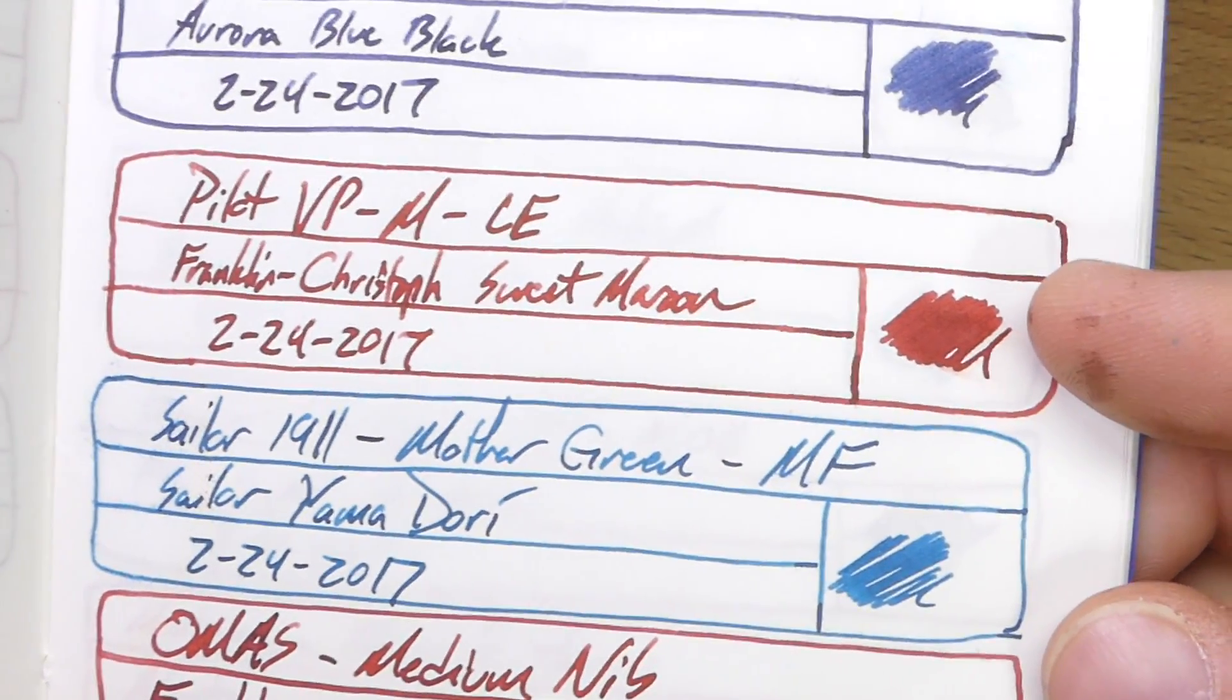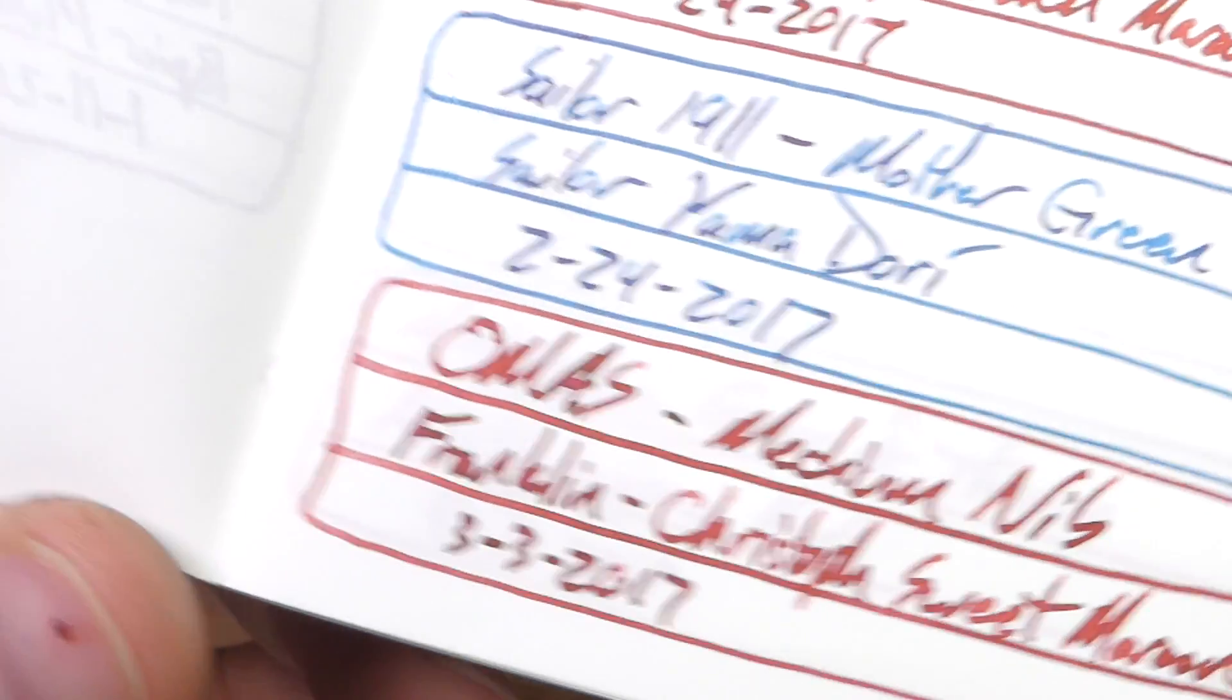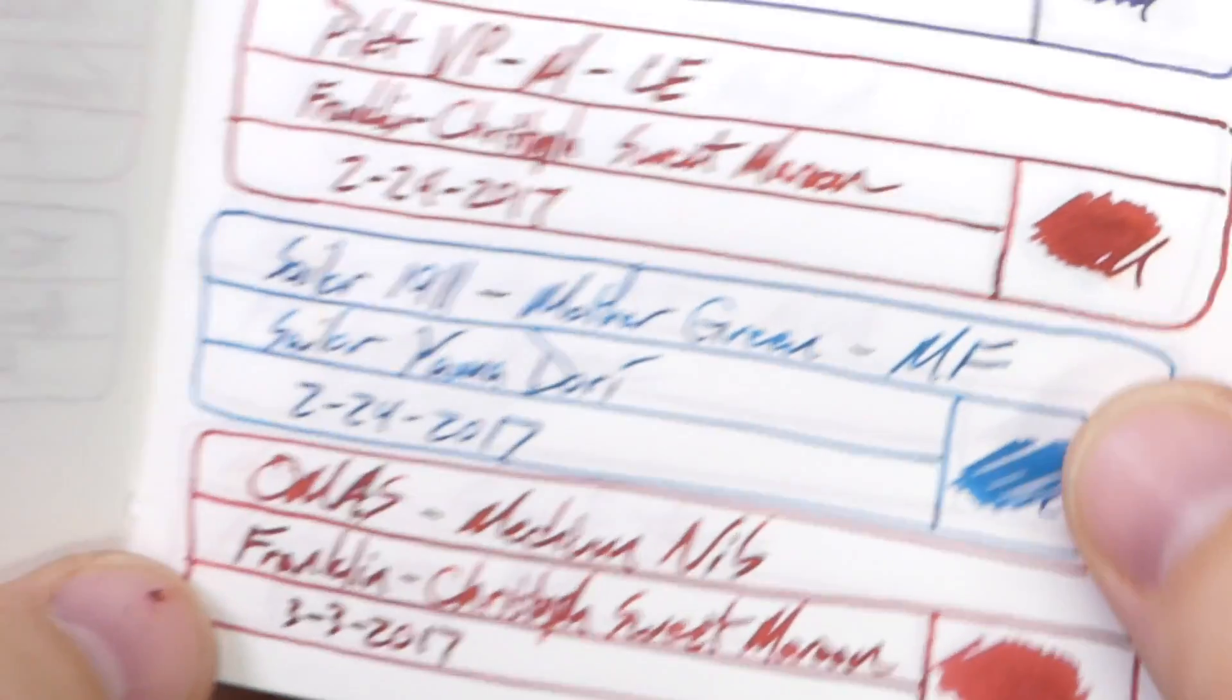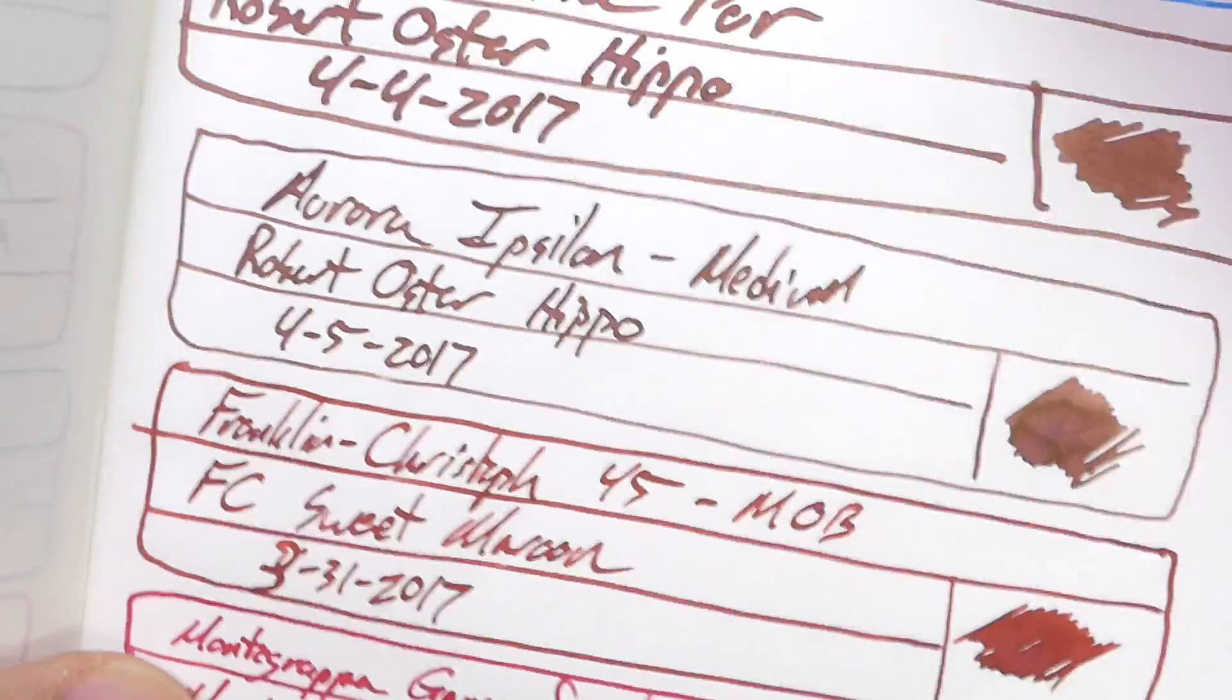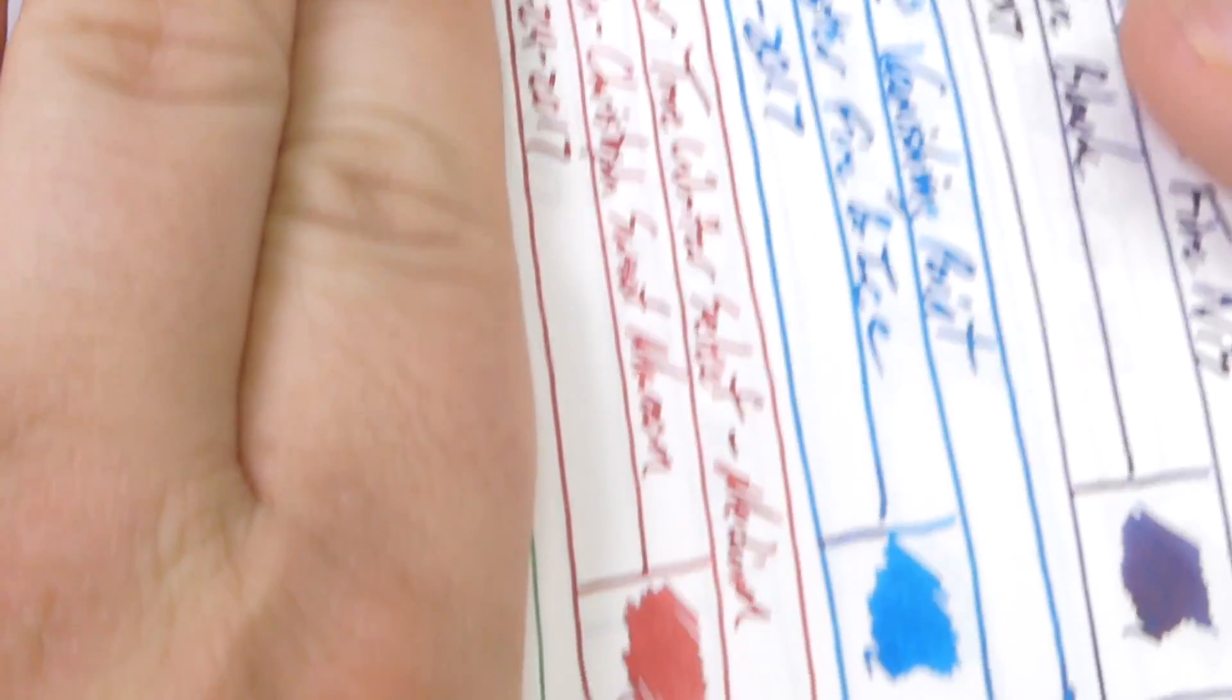Here we have it on Tomoe River. This is the first one I had it in, which is this Franklin Christoff. It comes out very well on Tomoe River, of course. Here it is in the Omos. You still get these really dark bits. And there in the A, you see you do get that sheen. I'm also kind of proud of that A, that's a good looking A. You get a little bit of sheen in there. And also down here in the 2017 and the 3s, you get that green sheen. If you put enough down, you will see that cool color.